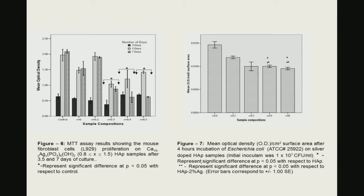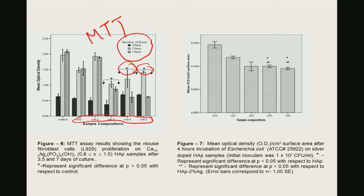Quantification of this discussion is shown via MTT assay results at three time points: 3 days, 5 days, and 7 days in culture, for different silver substitution levels up to 0.5. There is a slight reduction in optical density values, but this reduction is certainly not as extreme as seen in the hydroxyapatite-zinc oxide composite. Interestingly, at 5 days and 7 days for x equal to 0.3 to x equal to 0.5, optical density values increase, meaning mitochondrially active or viable cells also increase. This contrasts with antimicrobial results, where there is a clear reduction in viable bacteria or colony-forming bacteria with silver incorporation into hydroxyapatite.